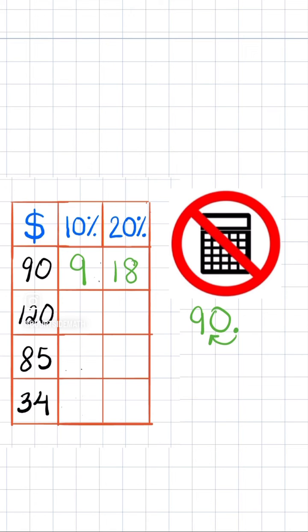If our check was $120, let's start by finding the 10% again. So move back one space to get $12 as 10% of 120. Now we double that to get 20% to give us $24.